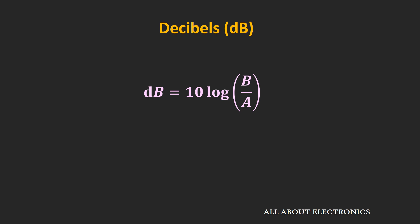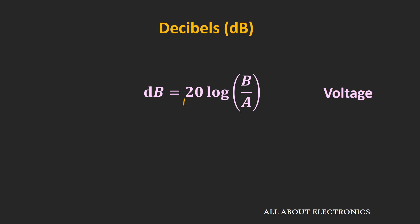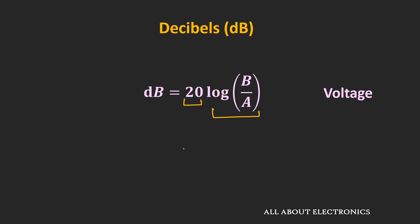Whenever the decibel scale is used to represent power gain or power, the factor of 10 is multiplied with the logarithm. Likewise, whenever it is used to represent amplitude or voltage, the factor of 20 is multiplied with the logarithm. The reason is that power is proportional to the square of voltage — that is why, when representing voltage or voltage gain, the factor of 20 is used.